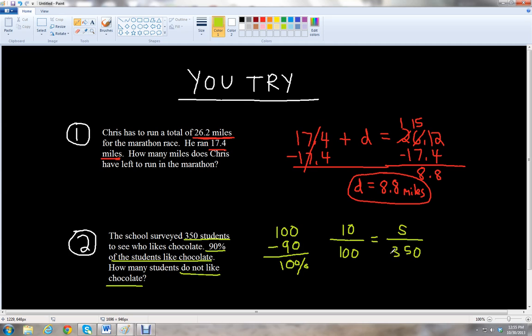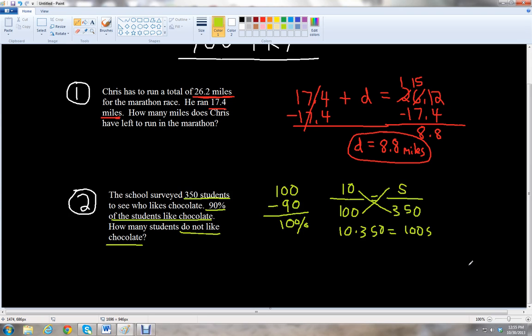And so, to solve for S, we're going to cross-multiply. And so, we get 10 times 350 equals 100 times S is 100S. And then 10 times 350 is 35. And then we have two zeros, so that's 3,500. Or 3,500 equals 100S. And then we divide by 100 to both sides. And then these two zeros, they'll cancel. There's two here. So, it looks like S equals 3,500 divided by 100, which is 35. So, we have 35 students. We have 35 students who do not like chocolate.